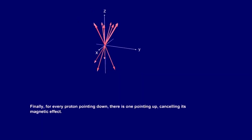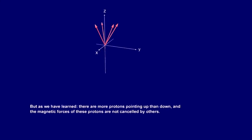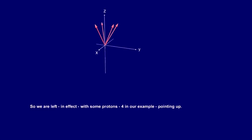Finally, for every proton pointing down, there is one pointing up, cancelling its magnetic effect. But as we have learned, there are more protons pointing up than down, and the magnetic forces of these protons are not cancelled by others. So we are left in effect with some protons — four in our example — pointing up.